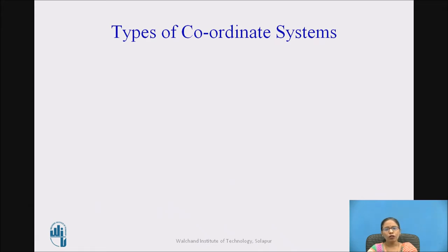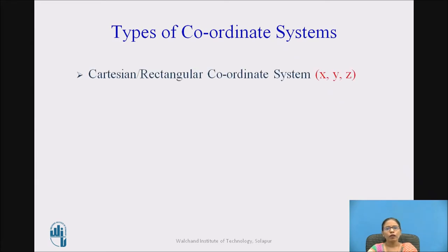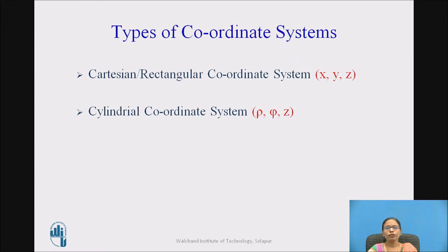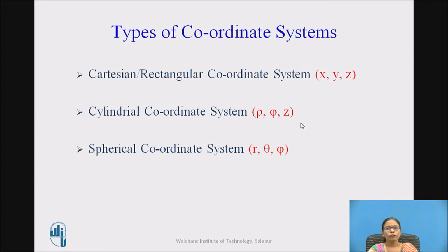What are the different types of coordinate systems? The different types are: Cartesian, also called the rectangular coordinate system, with coordinates x, y, and z; cylindrical coordinate system with coordinates rho, phi, and z; and spherical coordinate system with coordinates r, theta, and phi.